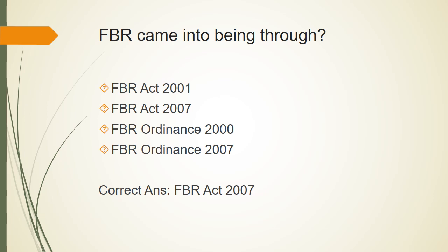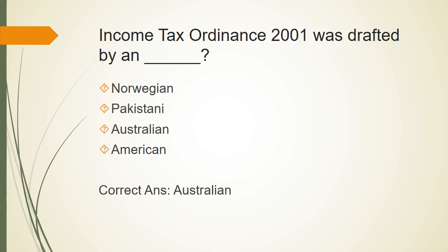FBR came into being through the FBR Act 2007 — remember, do not confuse it with the CBR Act, which was the Central Board of Revenue Act 1924. Income Tax Ordinance 2001 was drafted with Australian input and has since seen many amendments every year. Changes are made through the Finance Act before 30th June, and each Tax Year starts from 1st July and ends on 30th June, becoming enforceable for the next tax year.